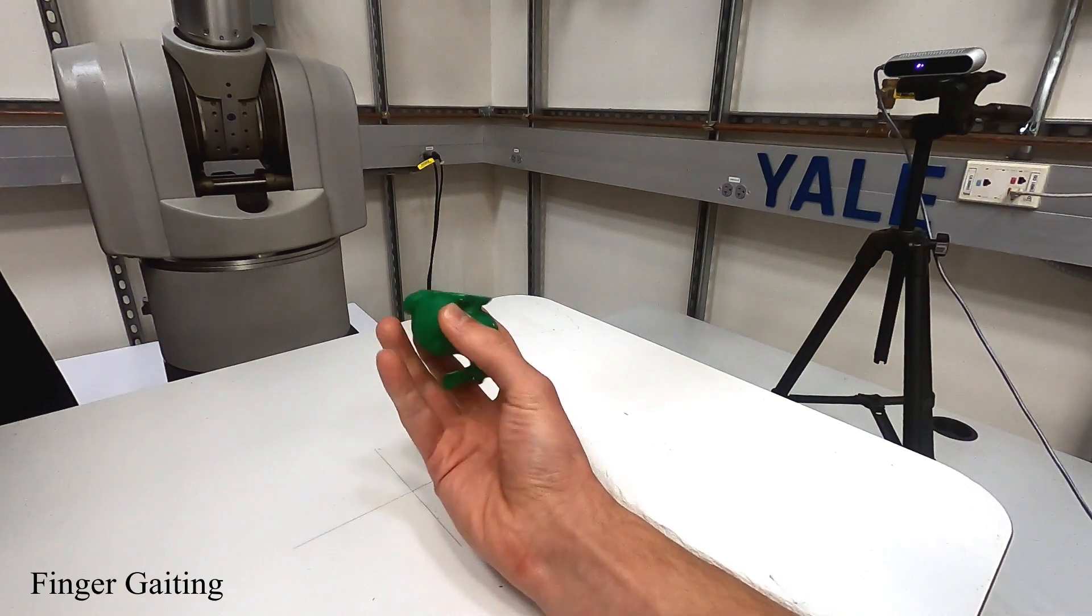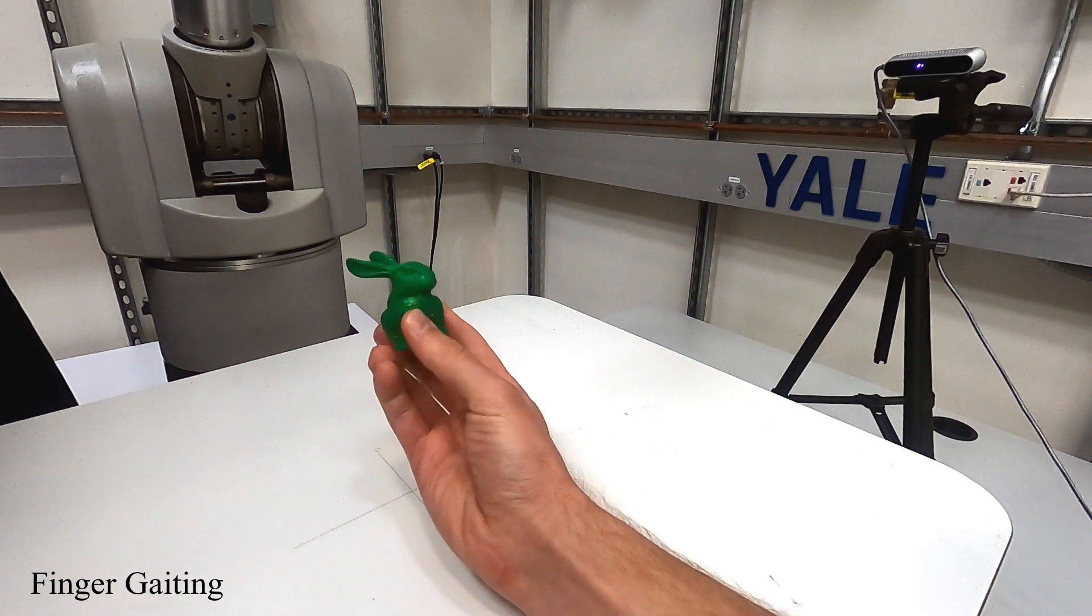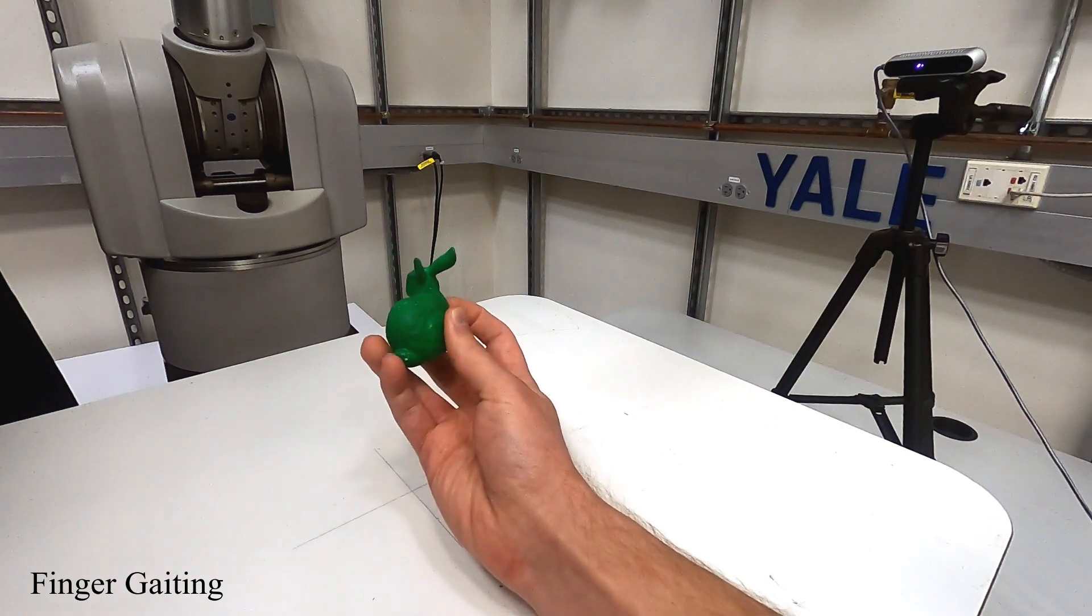Finger gating is inherently a multimodal problem. This means that the motion of the object is constrained to different manifolds according to the current contact configuration.